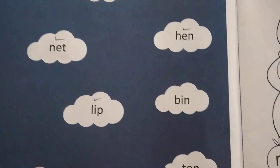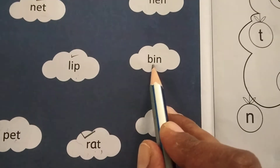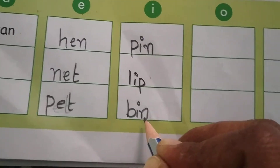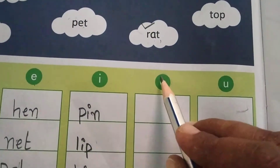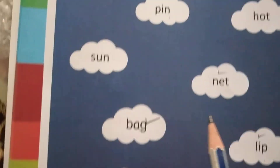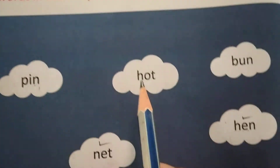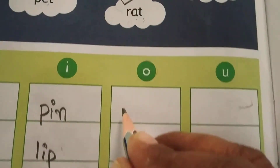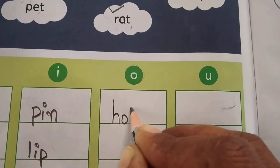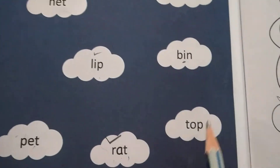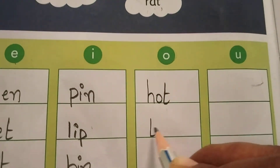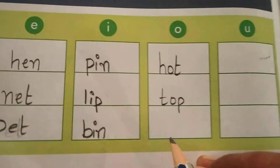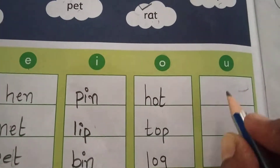Find one more word. Here: B, I, N — bin. I is there. So you should write in I. B, I, N — bin. Now vowel O. Find all the words where O should be there. Here: H, O, T — hot. Write H, O, T — hot. Here: T, O, P — top. Write T, O, P — top. Here: L, O, G — log. Write L, O, G — log. Completed.